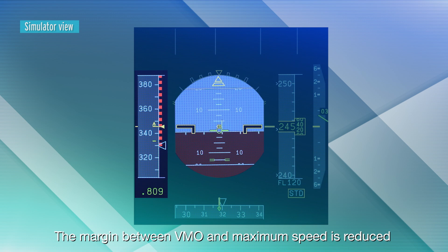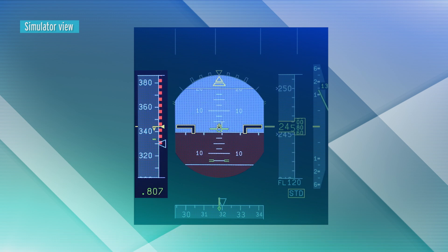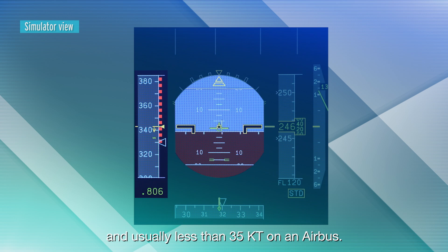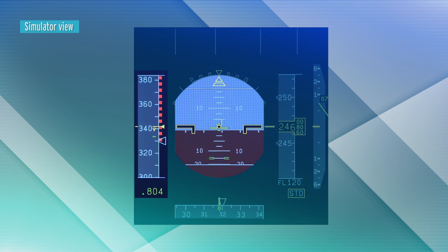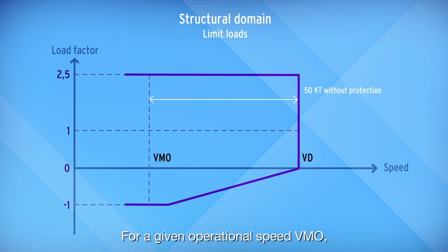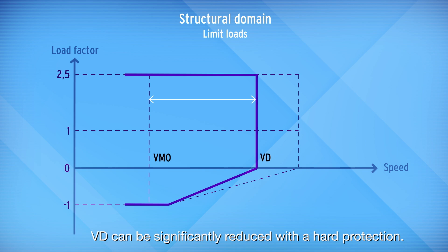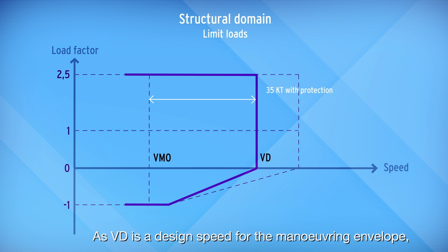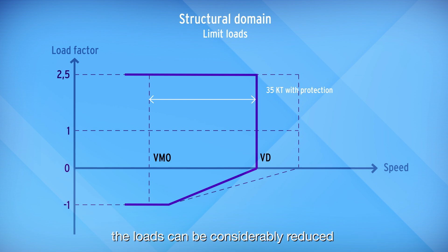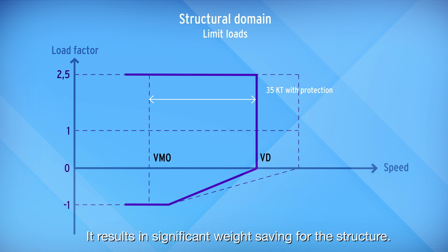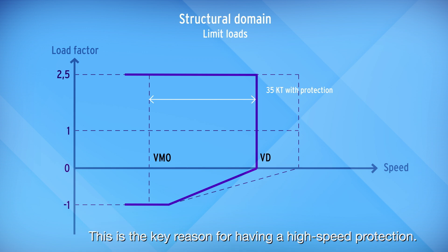The margin between VMO and maximum speed is reduced and usually less than 35 knots on an Airbus. For a given operational speed VMO, VD can be significantly reduced with a hard protection. As VD is a design speed for the manoeuvring envelope, the loads can be considerably reduced because they are a function of V². This results in significant weight saving for the structure. This is the key reason for having a high speed protection.